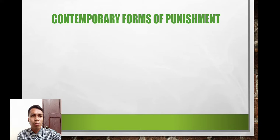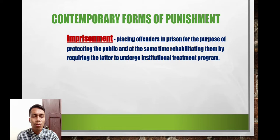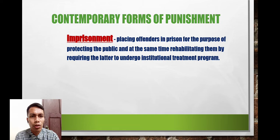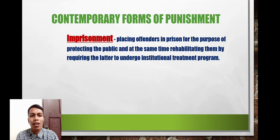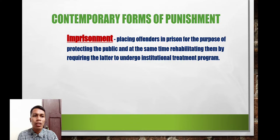The contemporary forms of punishment include: first, imprisonment — placing offenders in prison for the purpose of protecting the public while at the same time rehabilitating them by requiring them to undergo institutional treatment programs. Once an offender is found guilty, they are confined in a prison institution so the public will be protected, and so that the offender can be rehabilitated and become a productive, law-abiding citizen upon return to society.